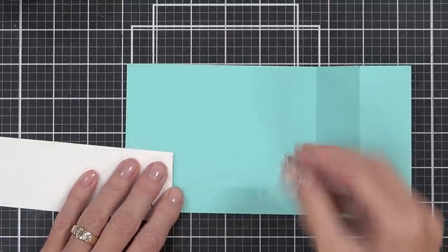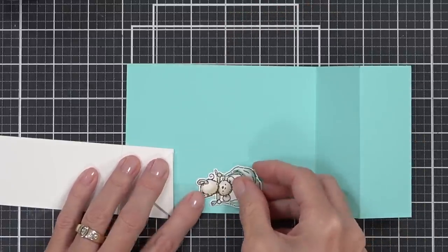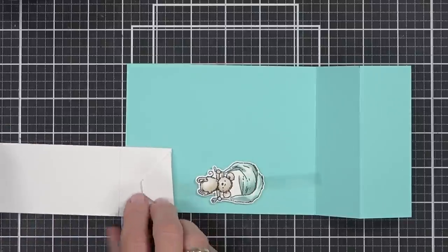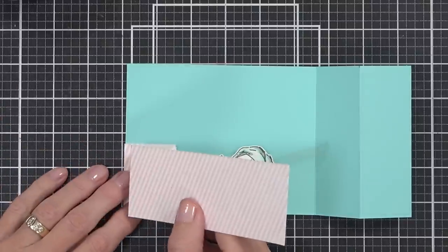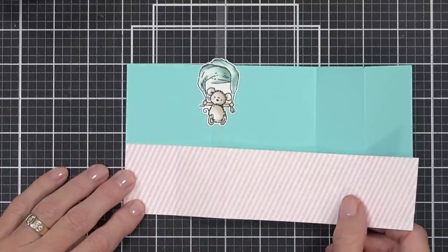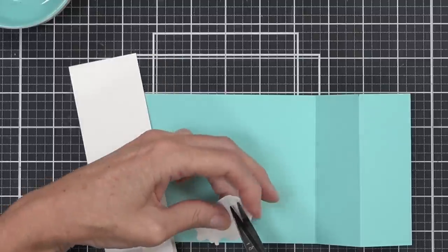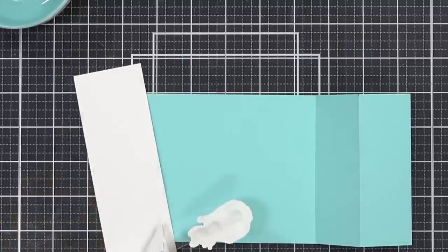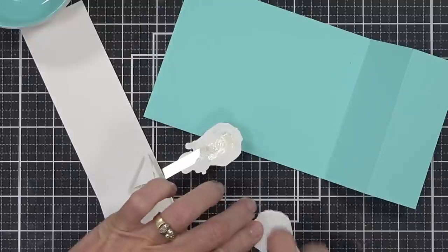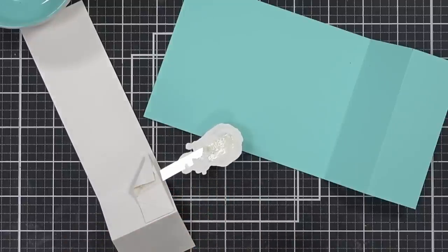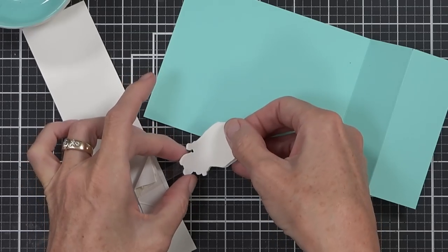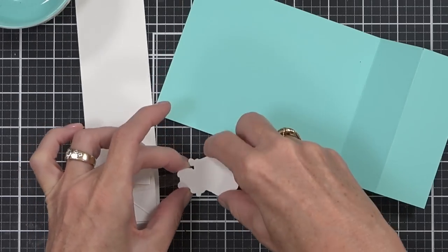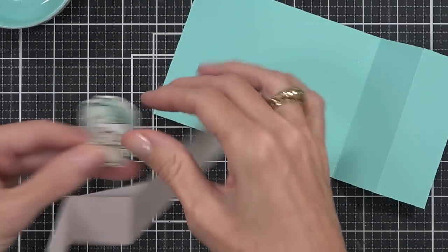A couple of things to be aware of is the size of the image that you're wanting to pop up, so that it needs to be able to fit behind this front piece of cardstock so it's hidden. But also when you open up the mechanism, that it's not going to be too big that it won't open properly either.